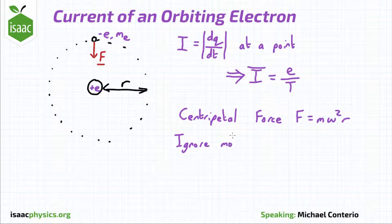Meaning you can ignore the motion of the proton even though the electron applies an equal and opposite force on it because the mass of the proton is much larger than the mass of the electron.